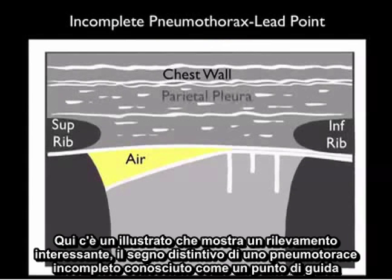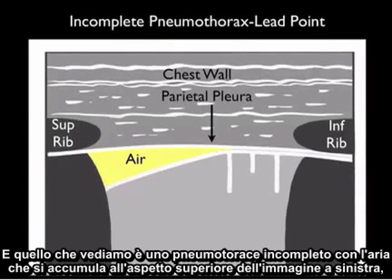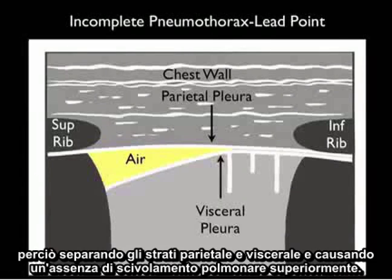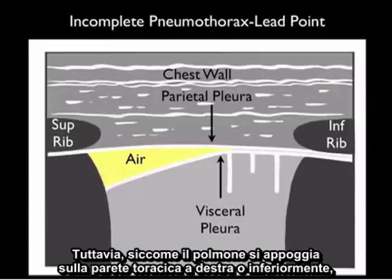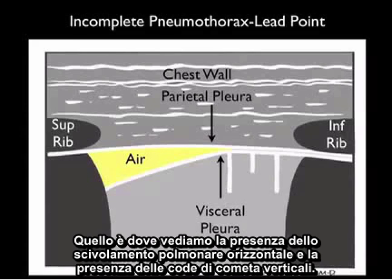Here's a pictorial showing an interesting finding — the signature of an incomplete pneumothorax known as the lead point. We see an incomplete pneumothorax with air collecting to the superior aspect of the image, splitting the parietal from the visceral layers and causing an absence of lung sliding superiorly. However, as the lung comes up against the chest wall inferiorly, that's where we'll see the presence of horizontal lung sliding and the vertical comet tails.